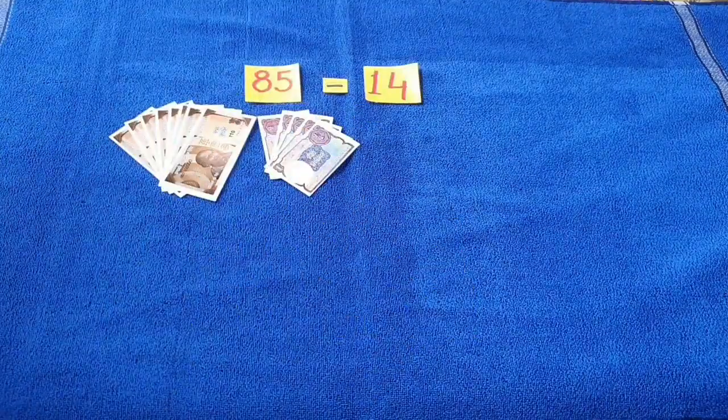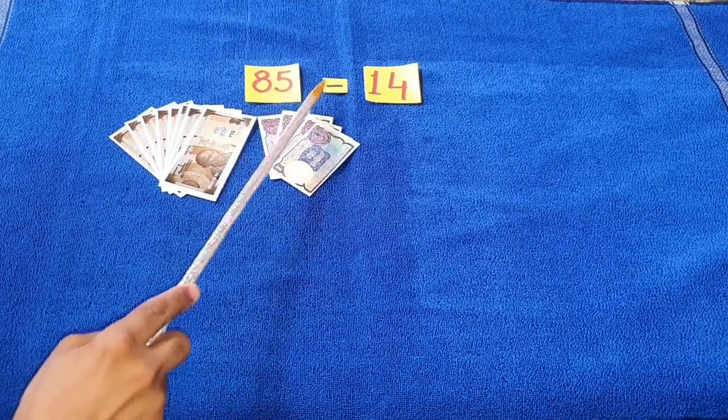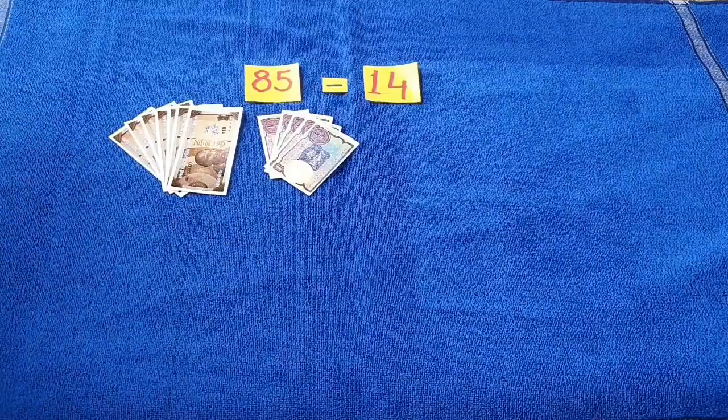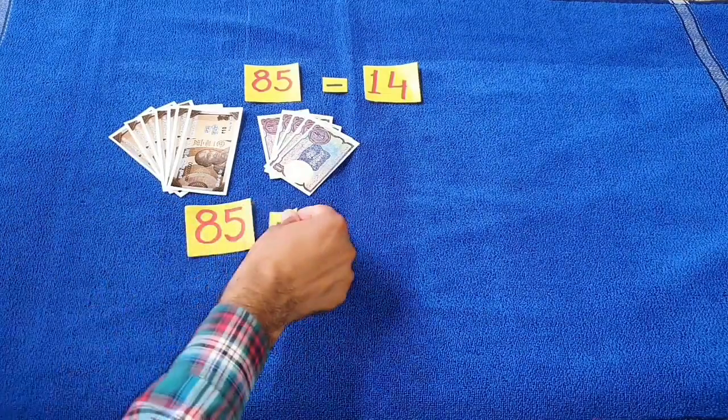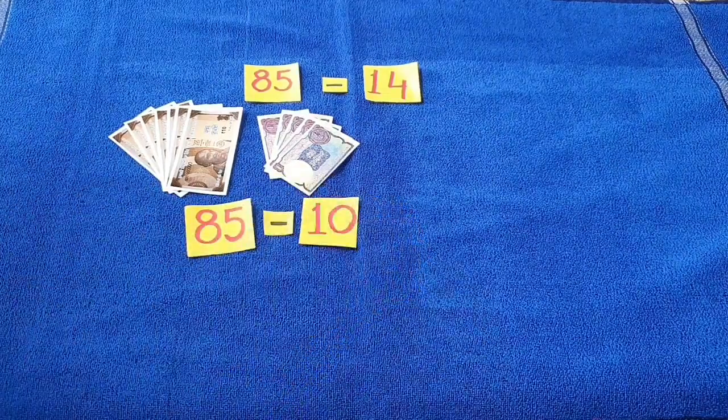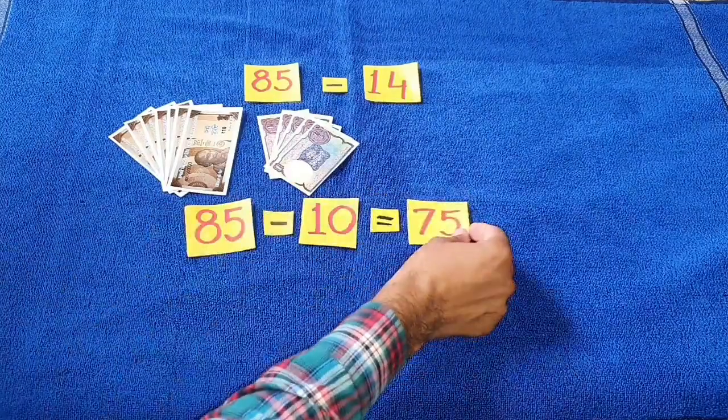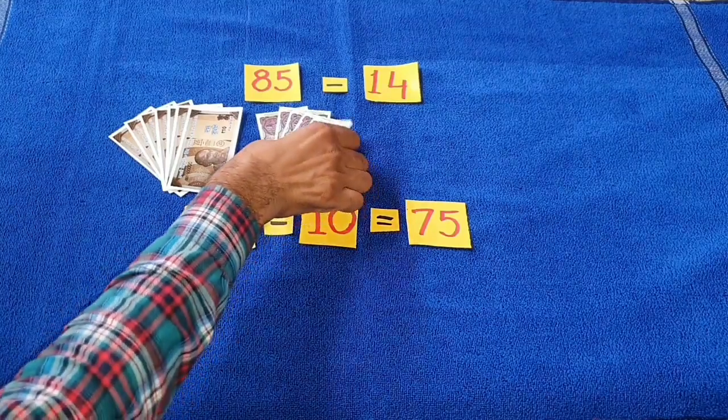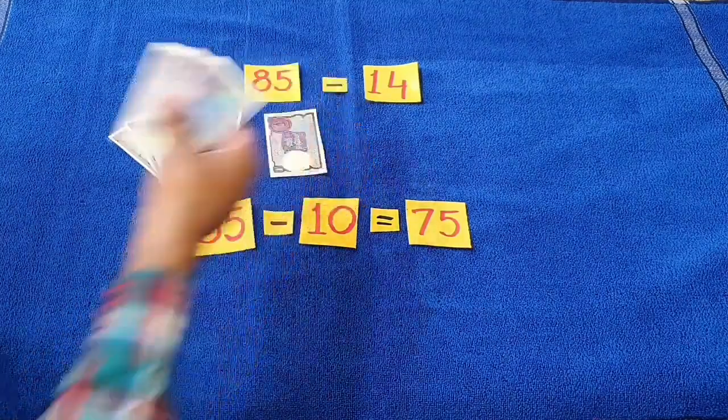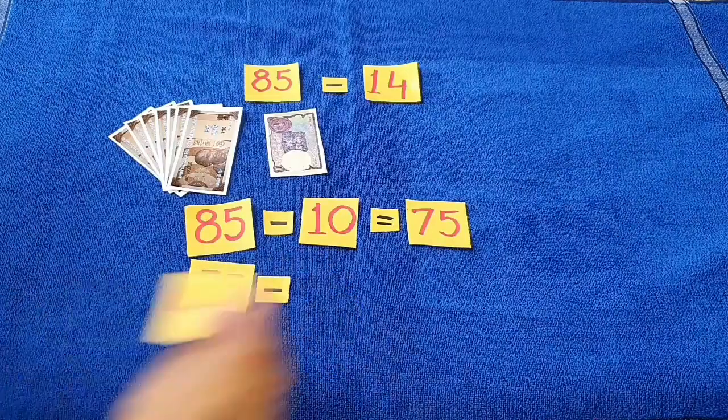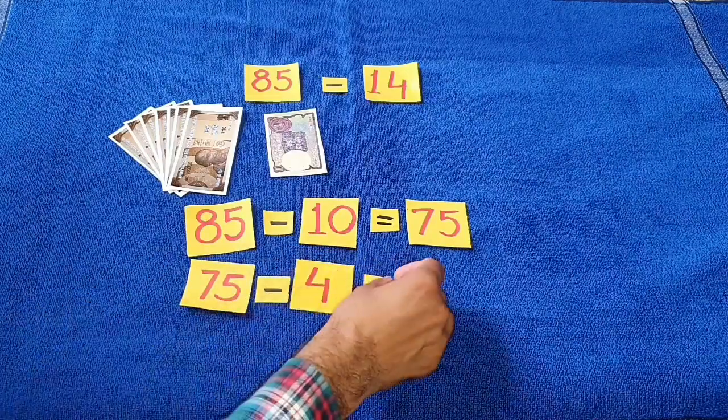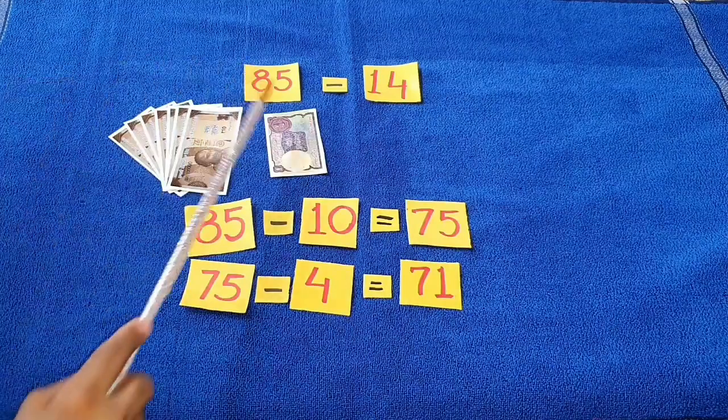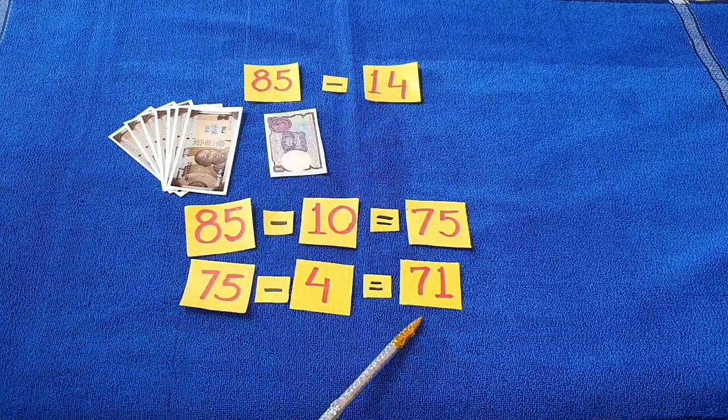Next question is 85 minus 14. We take away 10 rupees from 85 rupees. 85 minus 10 is equal to 75 rupees. Again, we take 4 rupees from 75 rupees. 75 minus 4 is equal to 71 rupees. So, 85 minus 14 is equal to 71.